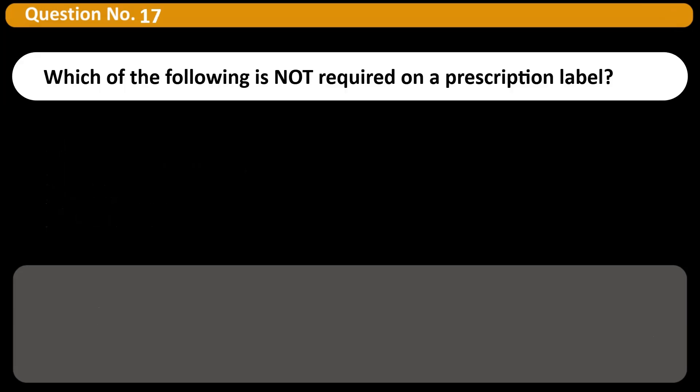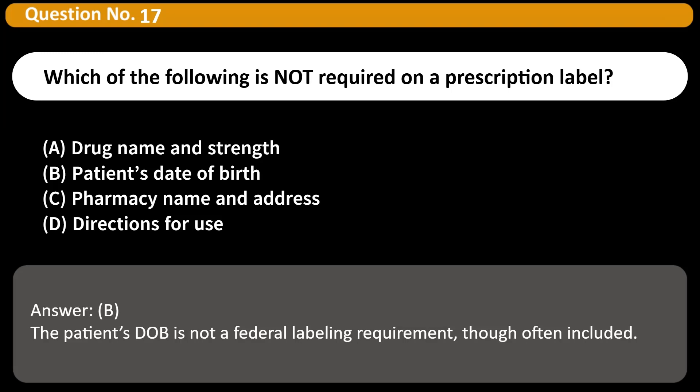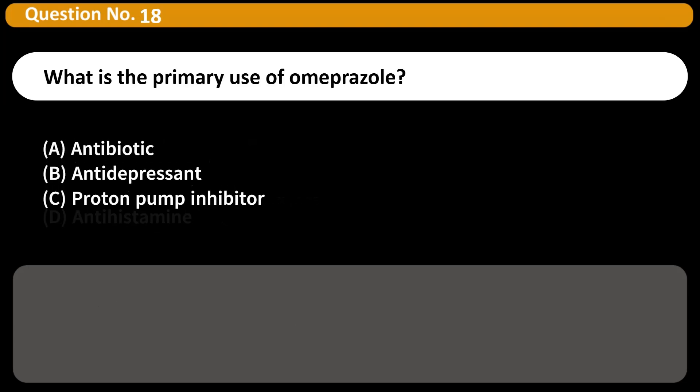Which of the following is not required on a prescription label? A. Drug name and strength. B. Patient's date of birth. C. Pharmacy name and address. D. Directions for use. Answer: B. The patient's DOB is not a federal labeling requirement, though often included.